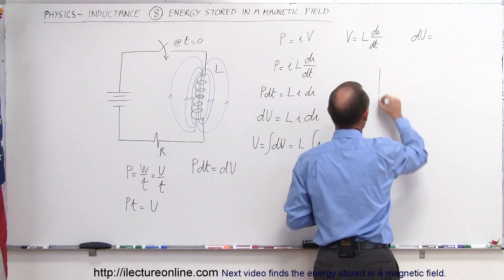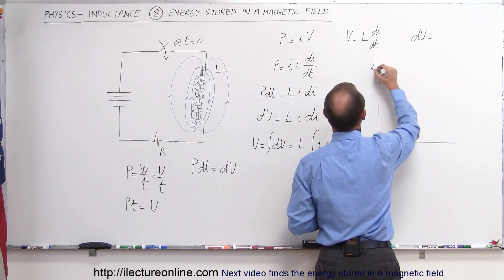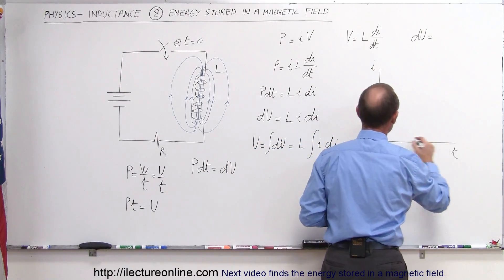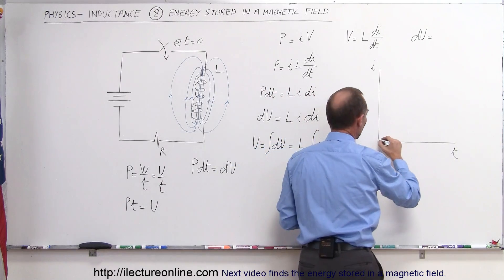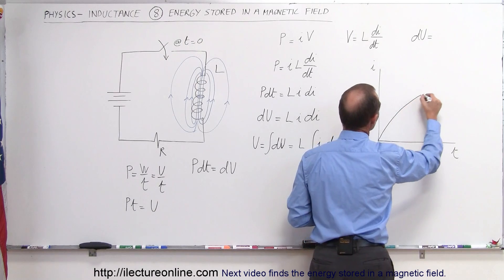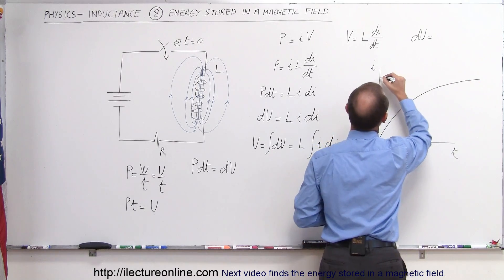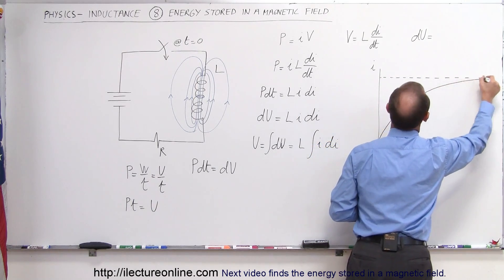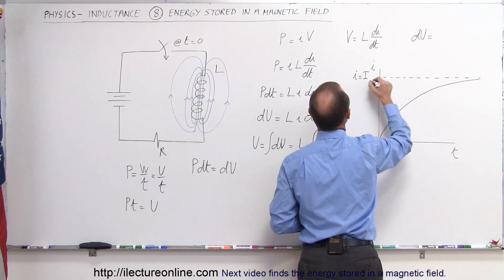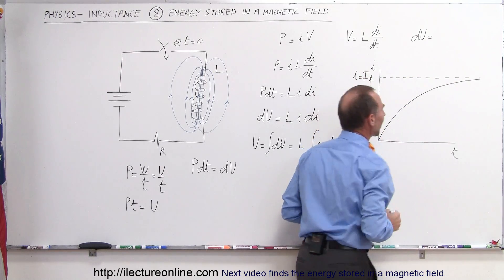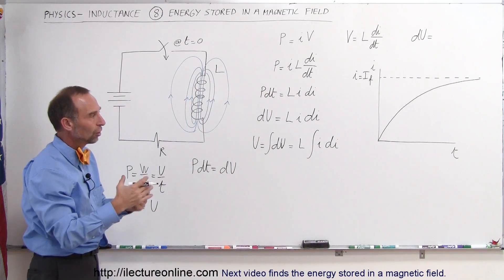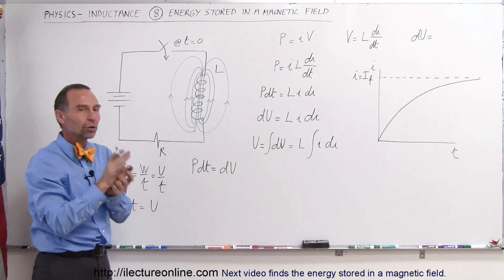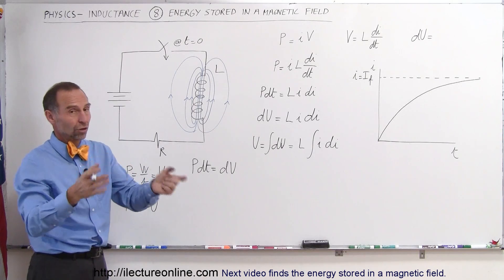let me show you graphically how that will happen. So, if I have the current I as a function of time t, at t equals zero, there is no current whatsoever. Then the current will increase over time, but then we'll eventually reach a steady-state value where I will be equal to I final. Or, yeah, let's just write as I final, the final or the steady-state current that we'll find in the circuit when the solenoid is no longer opposing a change because the current is no longer changing.